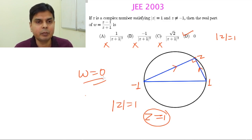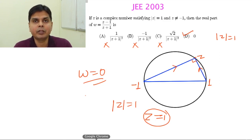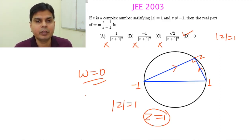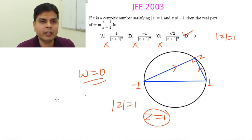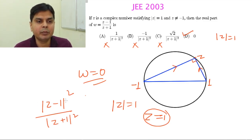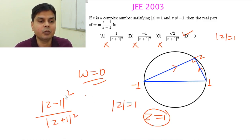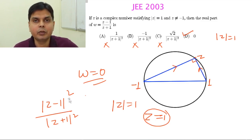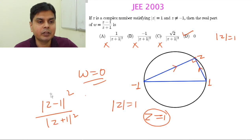Of course, in an exam where you just need marks, there is no harm using the trick since an objective paper checker won't know. But if the paper setter had included a dummy option like (Z minus 1)² divided by modulus(Z plus 1)² — which also gives 0 when Z equals 1 — the trick would not help distinguish the correct answer. The paper setters would have done a better job by including such a dummy option.